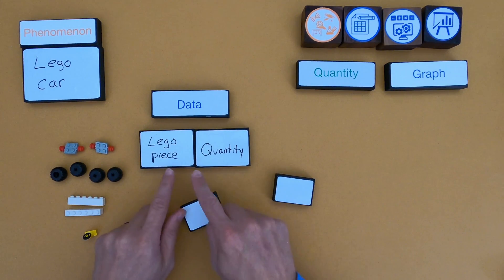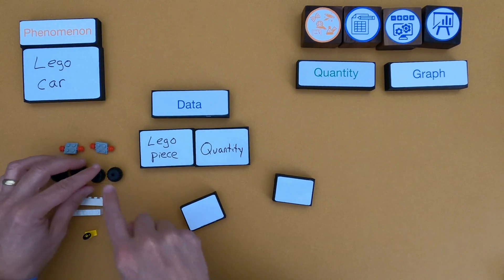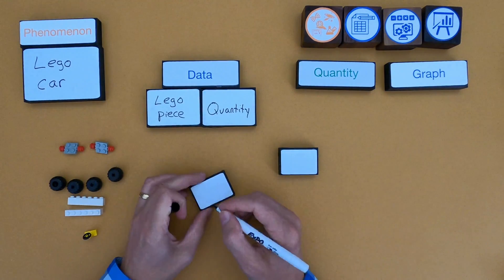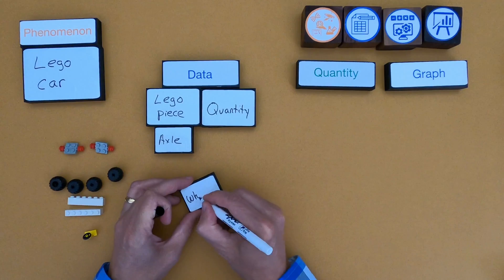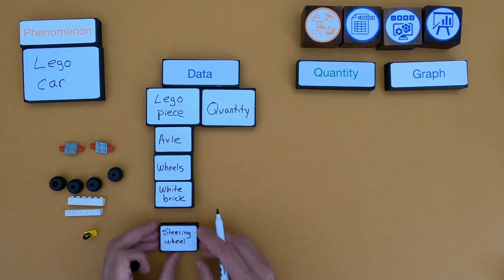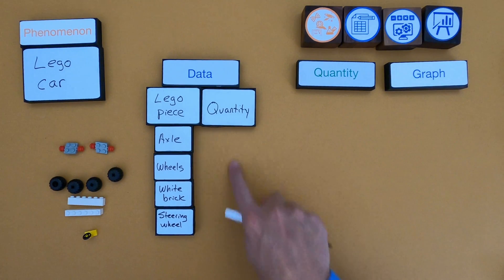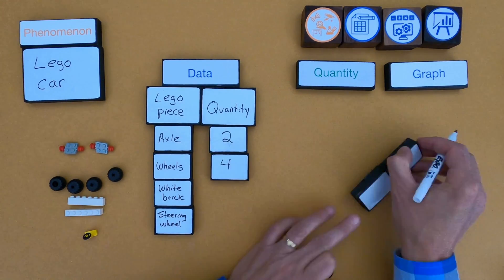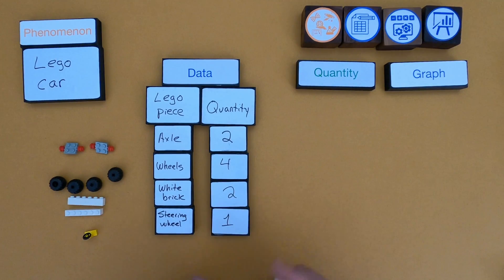Okay, so the next thing I want to do is I want to identify the qualities. What are the qualities of all these Lego pieces? So let me do that. And now I want to define what's the quantity. How many are there?